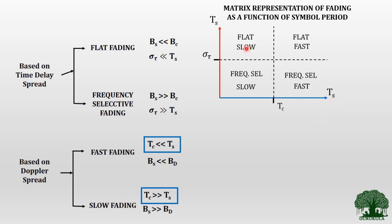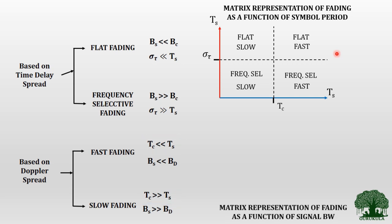We have compared the symbol period T_s with both the delay spread σ_τ and the coherence time T_c. This graph helps us understand what type of fading we experience in different regions with respect to symbol period. Similarly, we can also represent fading as a matrix but this time as a function of signal bandwidth B_s, comparing it with channel bandwidth B_c.